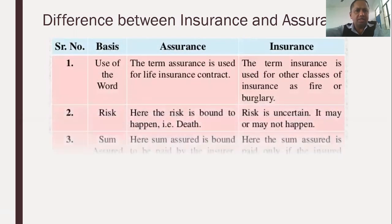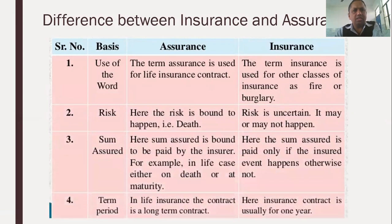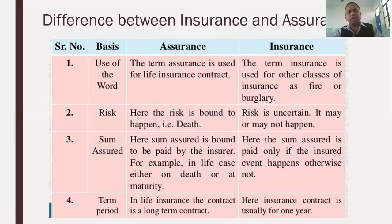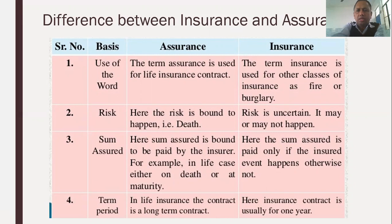There are several differences on various bases. The first basis is the use of the word. The term assurance is used for life insurance contracts in which, upon death or completion of the policy time period — whichever occurs earlier — the amount is paid by the company. The term insurance is used for other classes of insurance such as fire or any other type, which are part of general insurance.